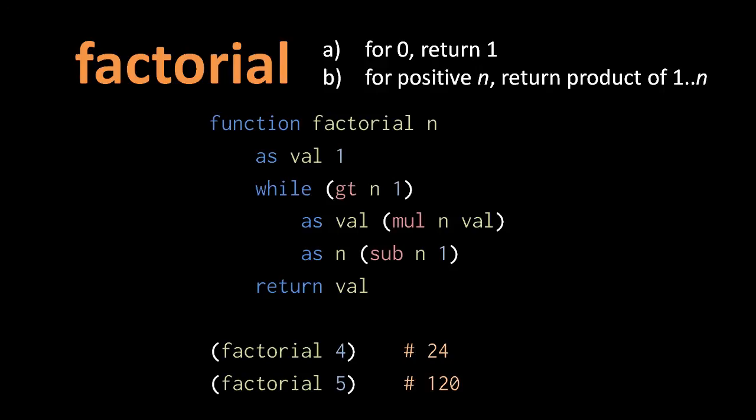So our factorial function invoked with the argument 4 returns 24. And that's what it should return, because the factorial of 4 is 24. Quickly though, consider the special case of 0. If we call the function with an argument of 0, val is assigned 1 as usual, but then the condition of the loop tests false right off the bat, so we never enter the loop at all, instead just returning the value 1, which is the correct answer for the factorial of 0.